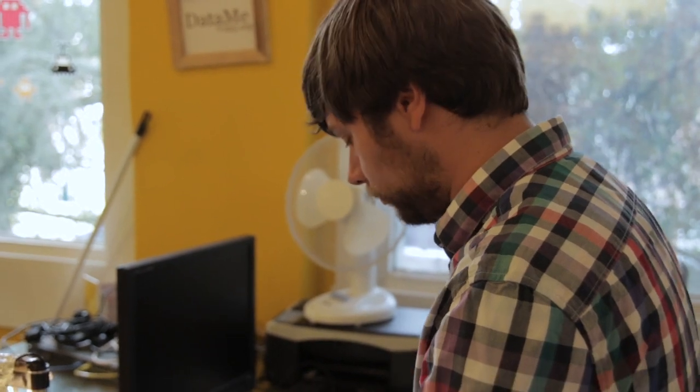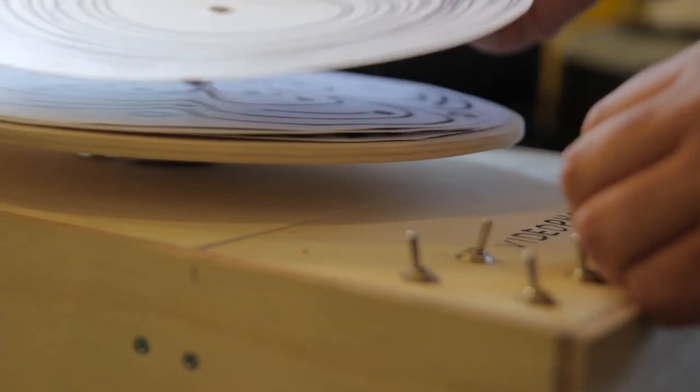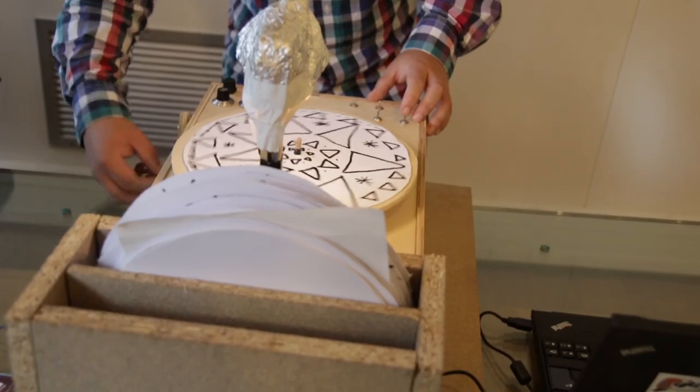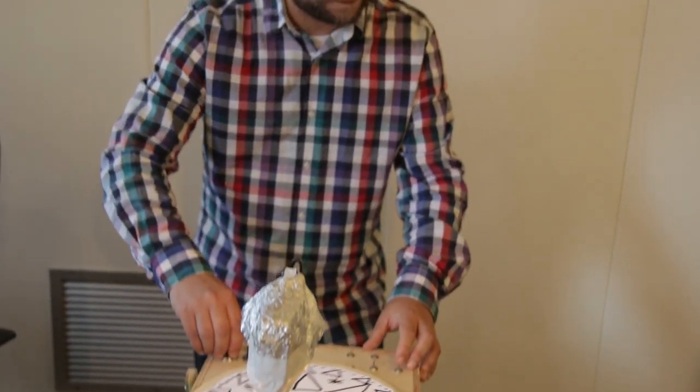It's a turntable to create visuals. You can draw your own visual on a sheet of paper and place it on the turntable, and then you have buttons and knobs to manipulate the image in real time.